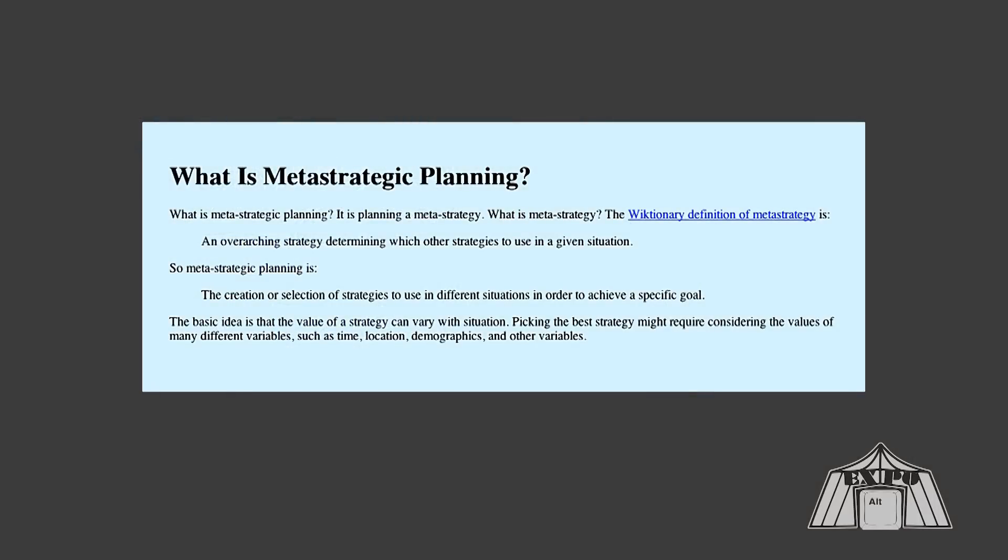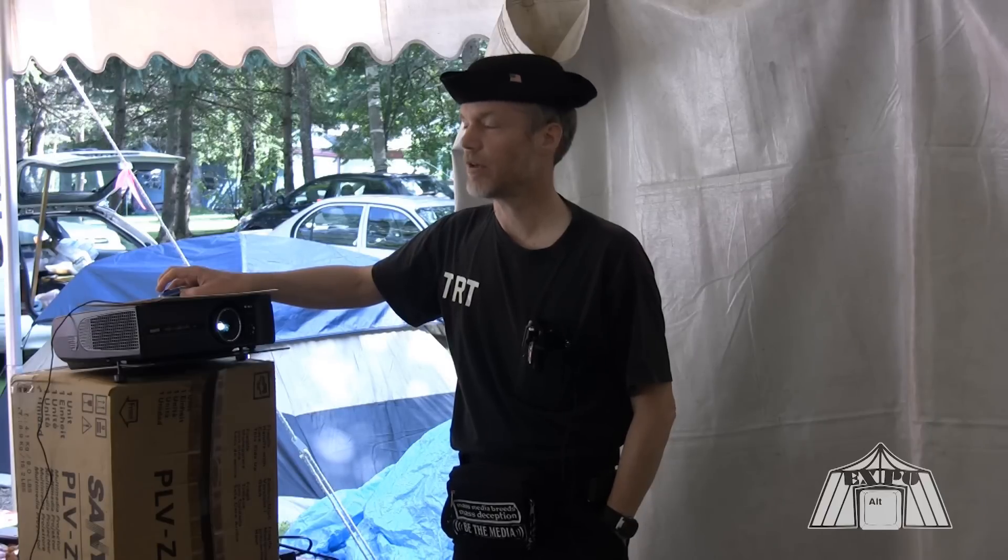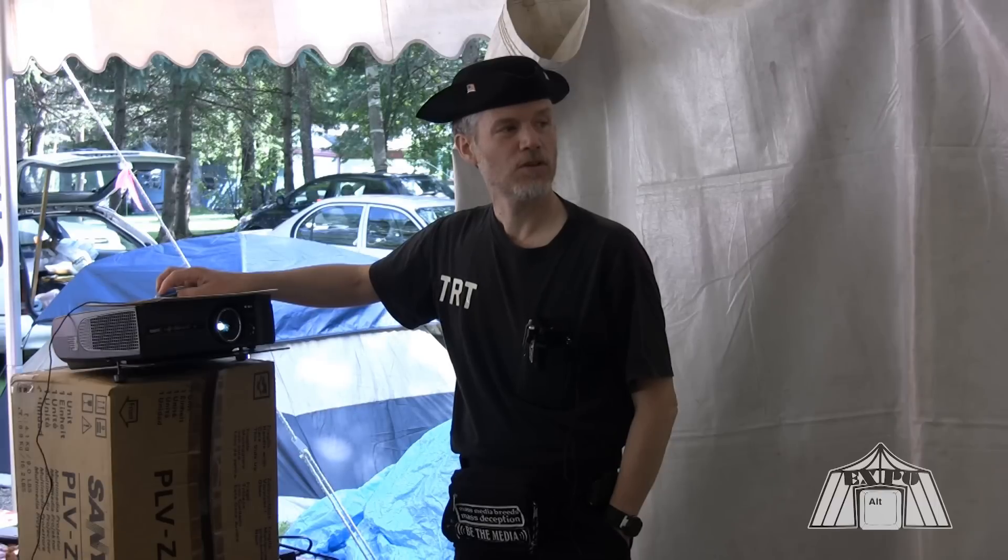So that's strategic planning in a nutshell. Now, what is meta-strategic planning? A meta-strategy is an overarching strategy determining which other strategies to use in a given situation. So meta-strategic planning is the creation or selection of strategies to use in different situations. And that sounds like a simple idea, and it really is. It almost basically means looking at the larger context of a given contest or game or whatever and picking out the best strategy for it. A strategy can be a sub-strategy in a larger strategy.